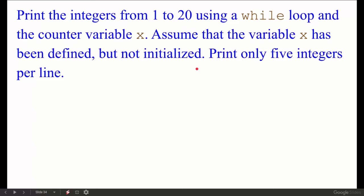Print the integers from 1 to 20 using a while loop and the counter variable x. Assume that the variable x has been defined but not initialized. Print only 5 integers per line. It means that we write a while loop. We write a counter variable x. We want to initialize and print every 5 we have a new line print.